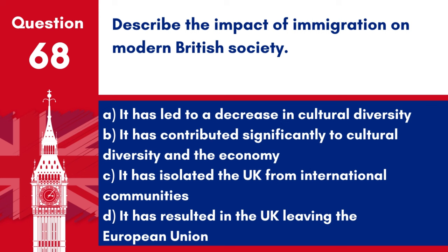Question 68. Describe the impact of immigration on modern British society. A. It has led to a decrease in cultural diversity. B. It has contributed significantly to cultural diversity and the economy. Answer: B. It has contributed significantly to cultural diversity and the economy. Immigration has shaped modern British society by contributing to cultural diversity and the economy.